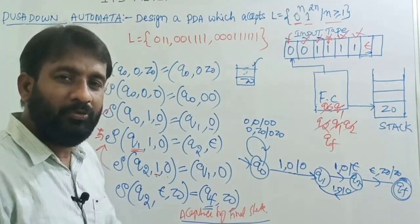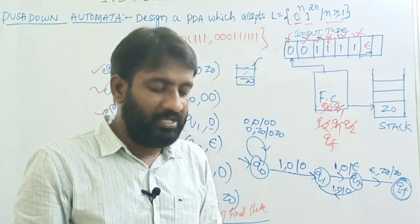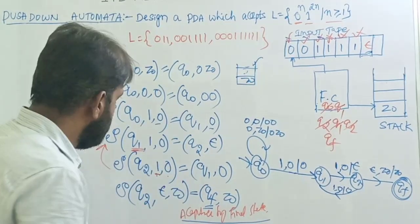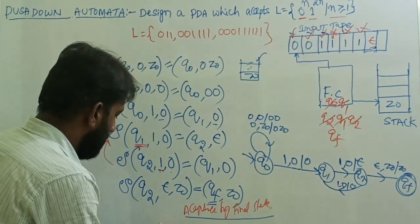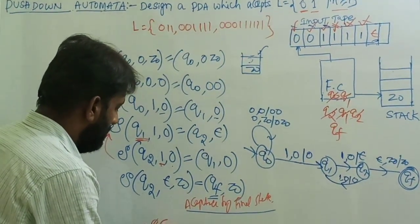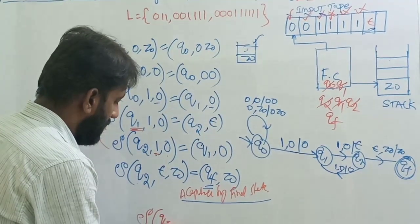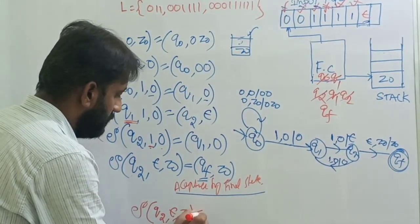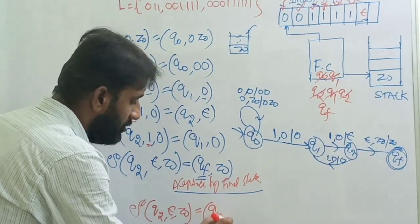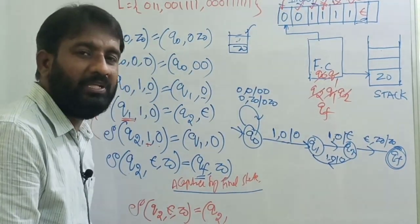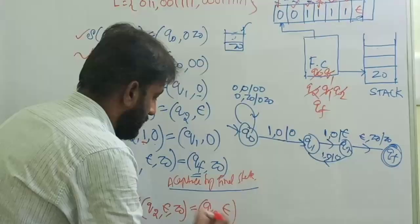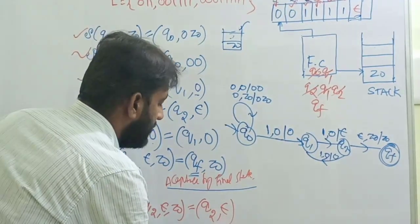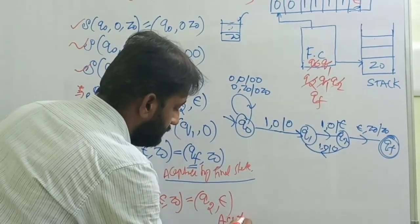If you want the same design to use acceptance by empty stack instead, you only need to add one transition: δ(q2, ε, Z₀) = (q2, ε) — remain in state q2 while removing Z₀ from the stack. This is acceptance by empty stack.